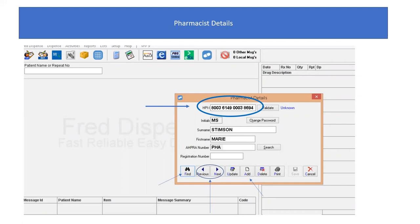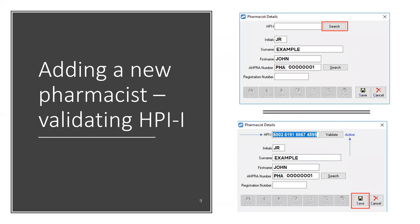Enter or search for your AHPRA number. Click the search button next to the HPII field. Your surname and AHPRA number are used to search against the healthcare identifier service. Your HPII is now displayed on the pharmacist details window along with the status active. Click save to continue. If you are entering a new pharmacist, select add to add a new pharmacist into the system, enter or search for your AHPRA number, then click the search button next to the HPII field. FRED will retrieve your HPII and the status should be displayed as active. Click save to continue.